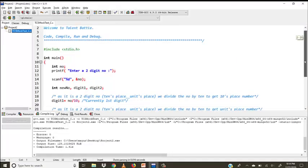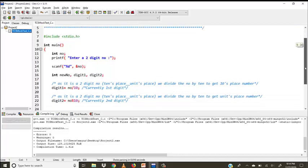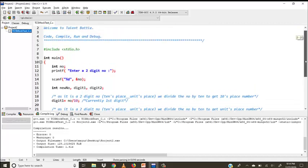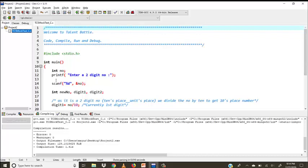Now let us begin with the program. This is the C code we have written to execute the problem statement. The input they wanted to be a two-digit number. So we have hash include stdio, int main.